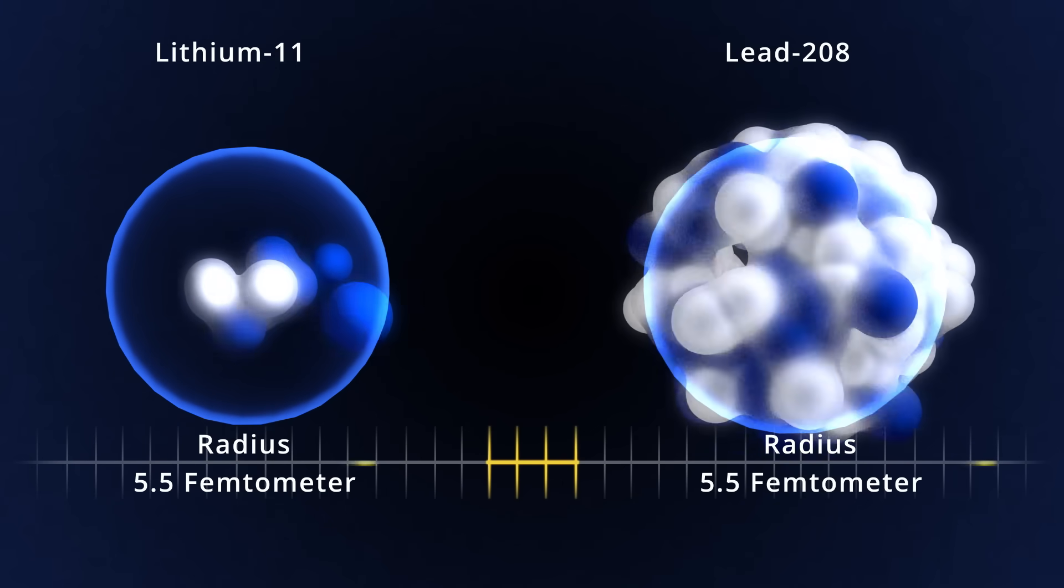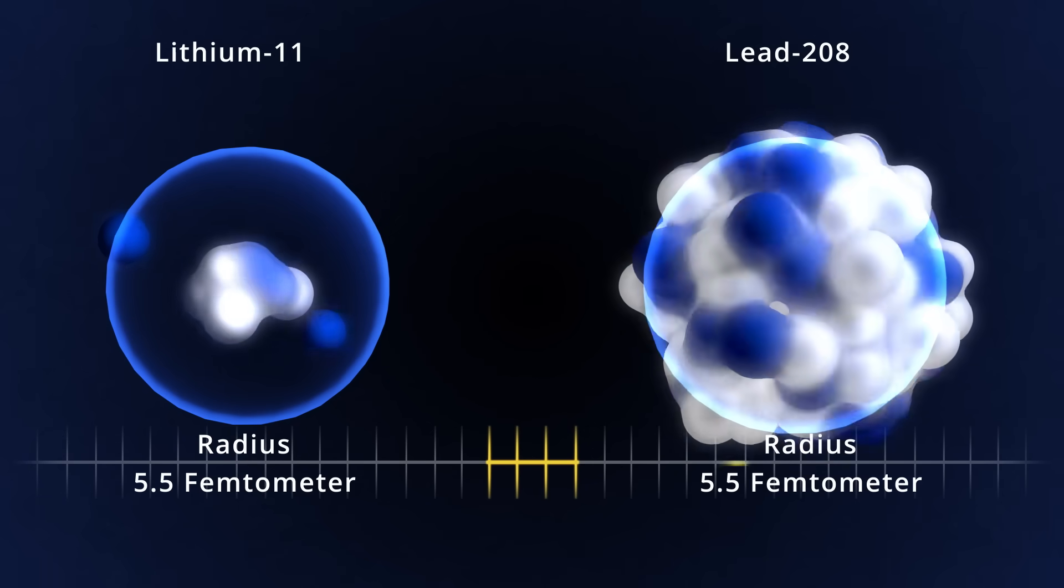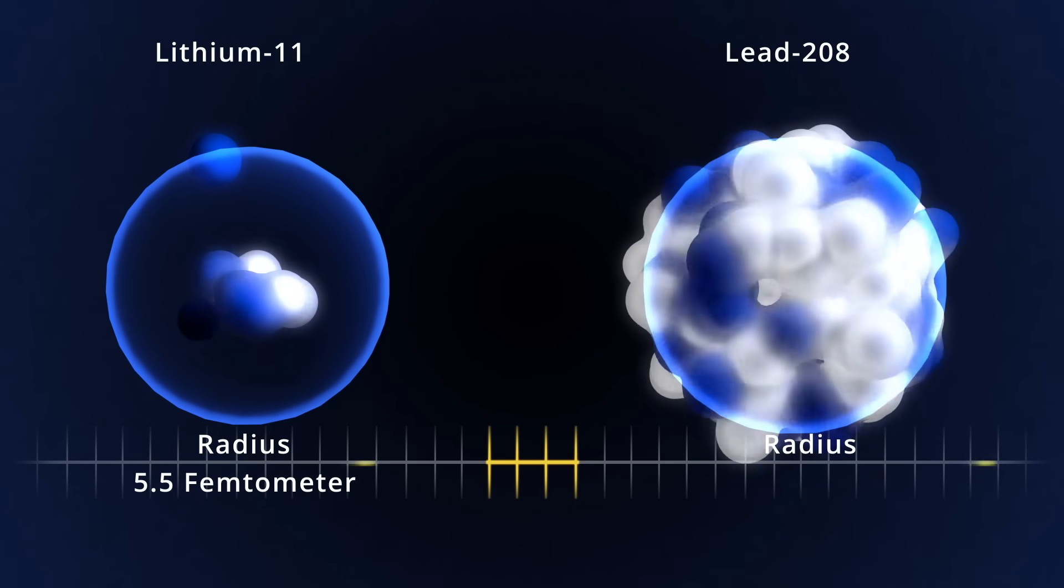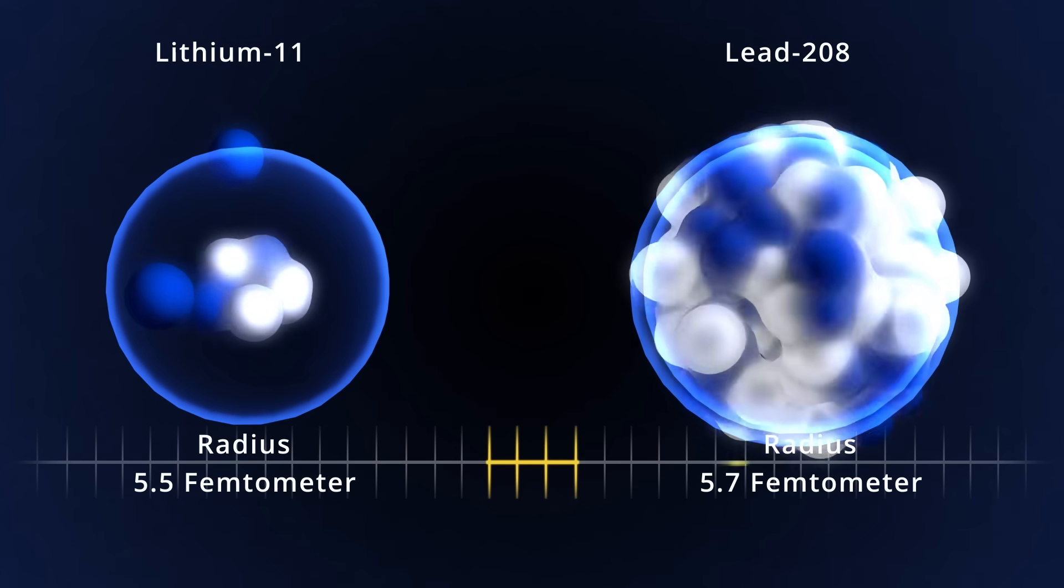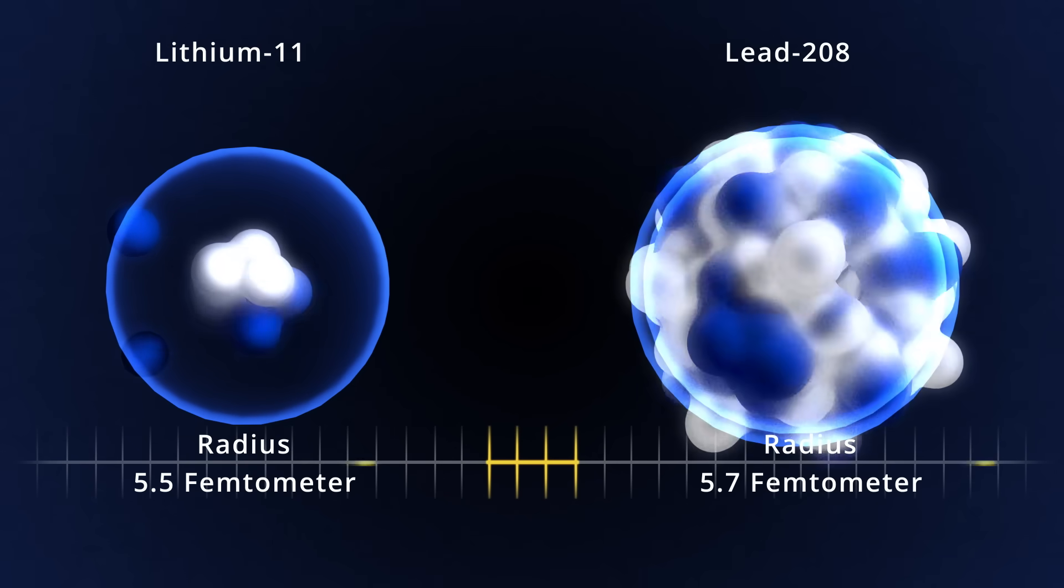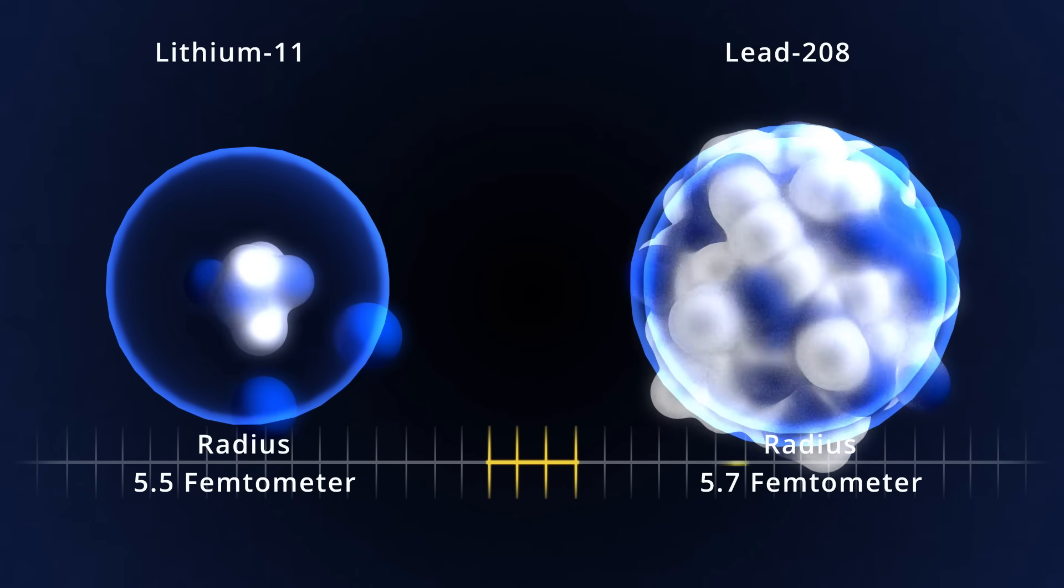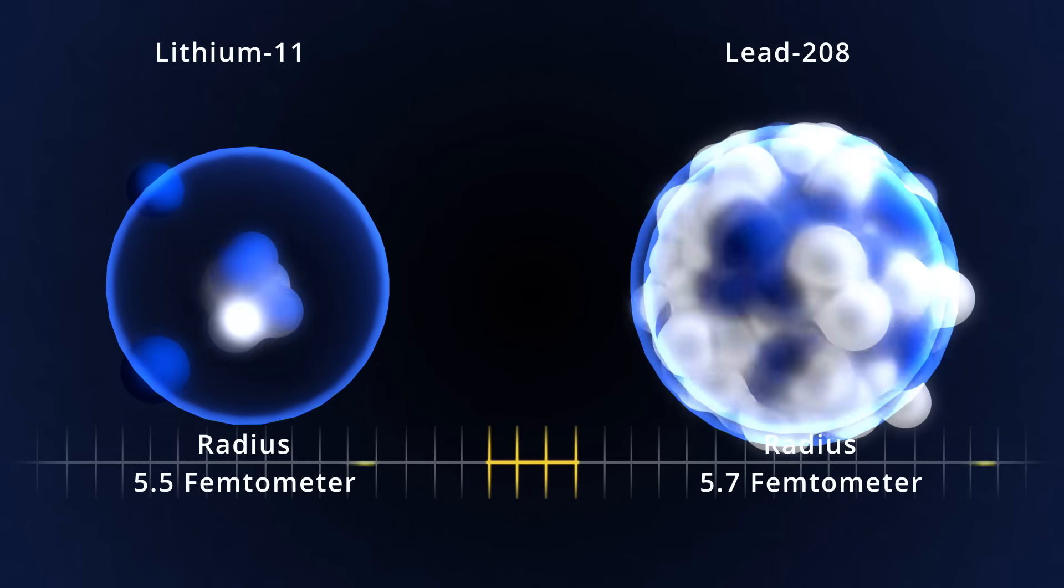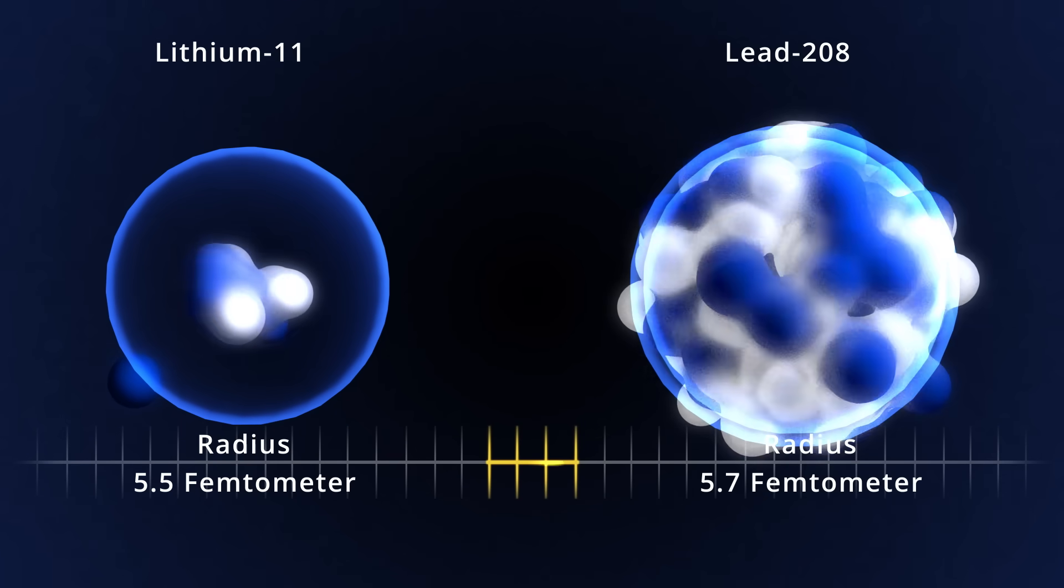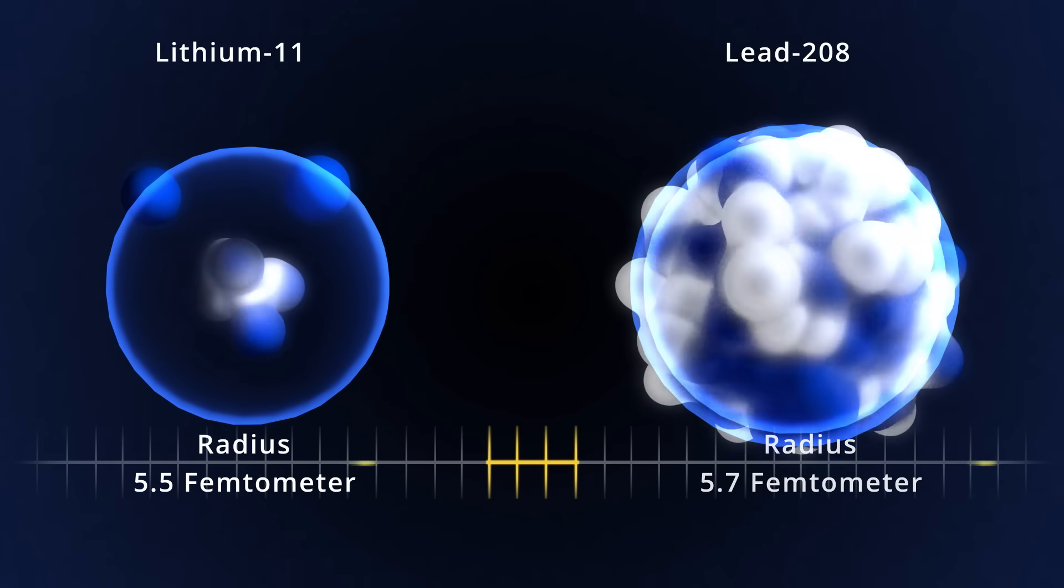Many heavy nuclei, such as lead-208, have a surplus of neutrons that one would expect to be on the outside and form a neutron's skin. Indeed, the radius that neutrons occupy in lead-208 is larger than that of the protons. But despite the large surplus of 44 neutrons, the difference is only 0.2 femtometers. This is due to the specifics of the proton-neutron force.